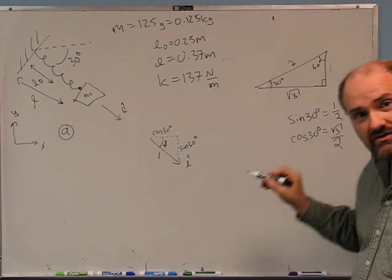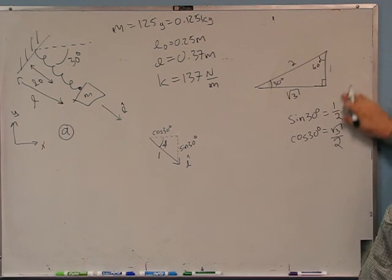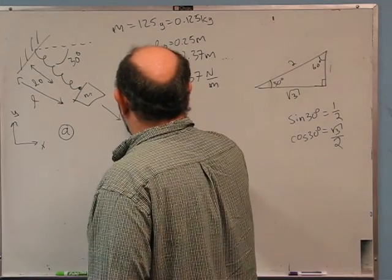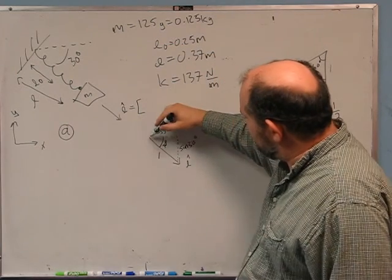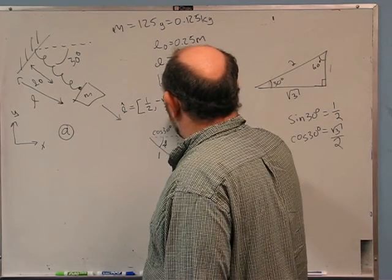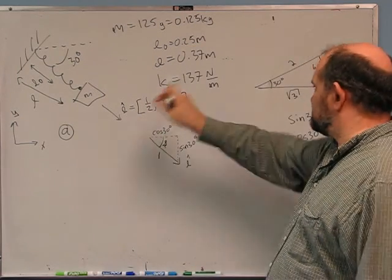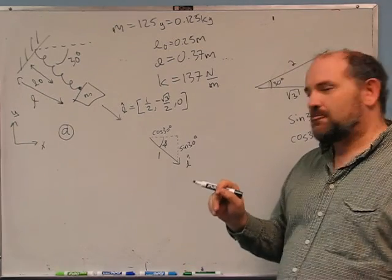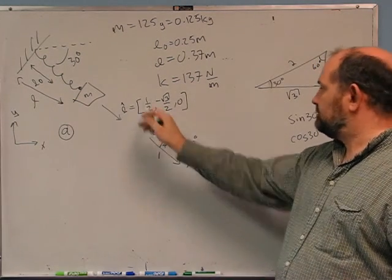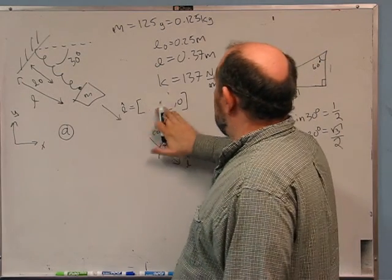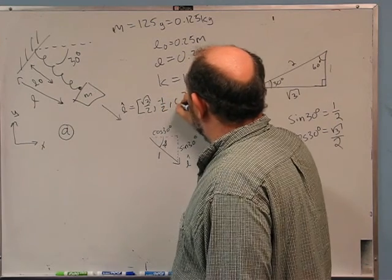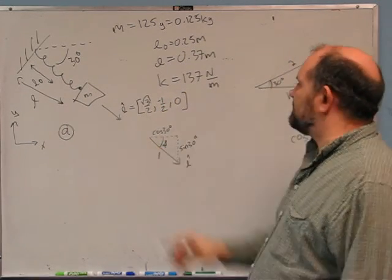So L-hat equals — wait, I did it backwards. You should all be yelling at me: the x component is the cosine and cosine 30° is √3/2. So L-hat is (√3/2, −1/2, 0). It's in the plus x but minus y direction. I could call that cosine θ minus sine θ, but I'll stick with those numbers.